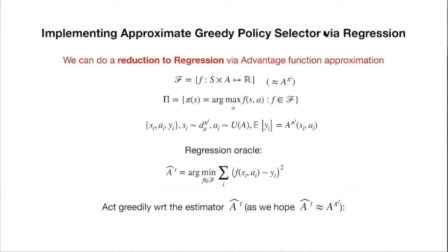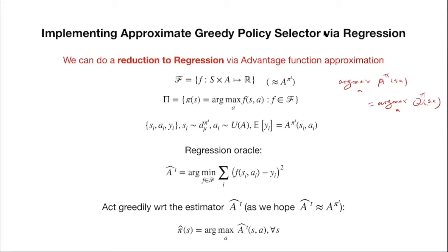We then act greedily with respect to our estimator: we pick the policy that is the argmax operator with respect to a-hat. This is essentially what approximate policy iteration does, except here we use the advantage function rather than the Q function. Note that argmax_a A^{pi}(s,a) equals argmax_a Q^{pi}(s,a), so focusing on the advantage is equivalent.